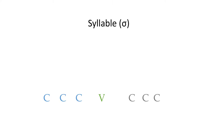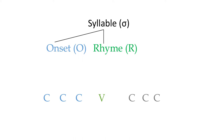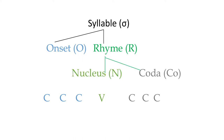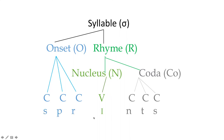If we break up a syllable, the Greek letter sigma is sometimes used as a symbol for a syllable. The first division is into the onset and the rhyme; the rhyme consists of a nucleus and an optional coda. For example, the word 'sprints' is a very complex English syllable with seven segments: the onset is 's-p-r,' the nucleus is the vowel 'i,' and the coda is 'n-t-s.'